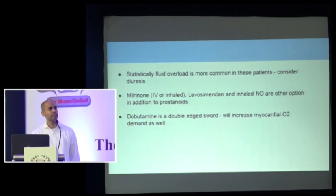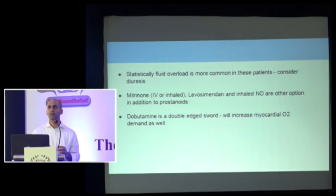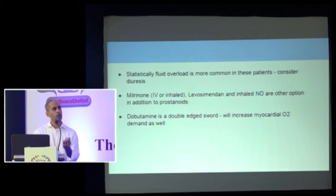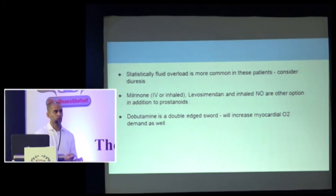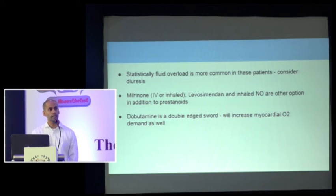Fluid overload is statistically more common in ICU PH patients — 80% of the time they're fluid overloaded when they arrive; only 20% are dry. Milrinone and Levosimendan — use them cautiously. If you're trying any agent in PH, make sure it's a short-acting agent. If you want to give metoprolol, try esmolol — it's safer and if something goes wrong, you can reverse course. Try to avoid long-acting agents. Beta blockers in RV-failing patients are generally not recommended, but if you must use them, use short-acting drugs.